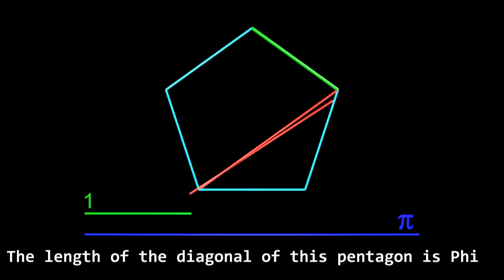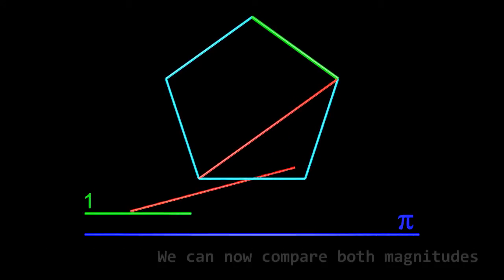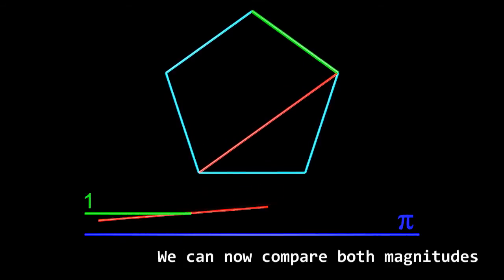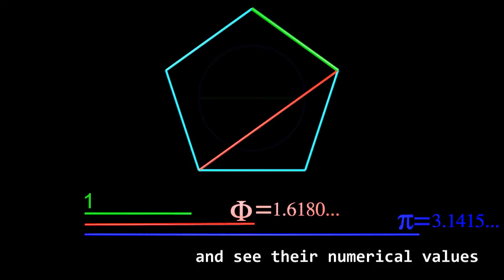The length of the diagonal of this pentagon is Phi. We can now compare both magnitudes and see their numerical values.